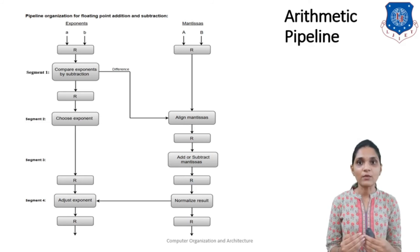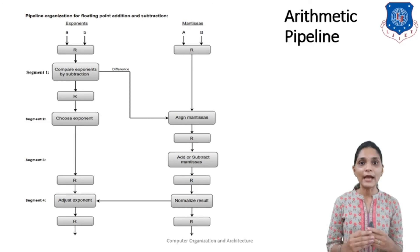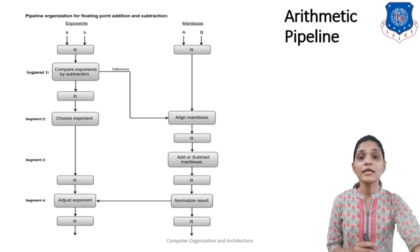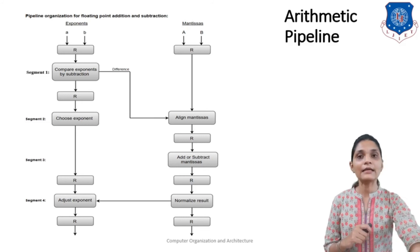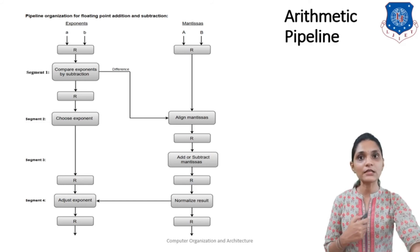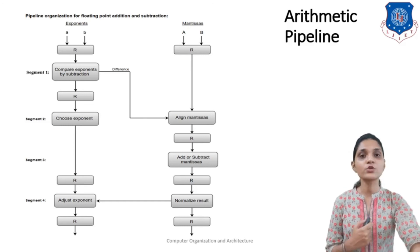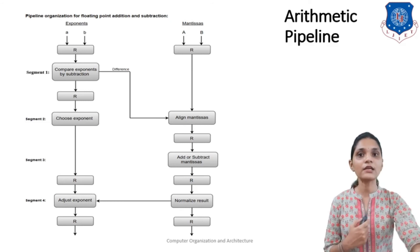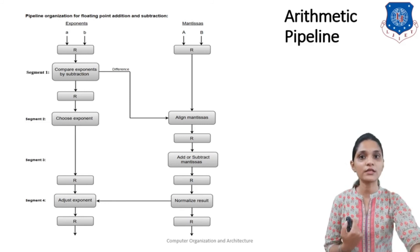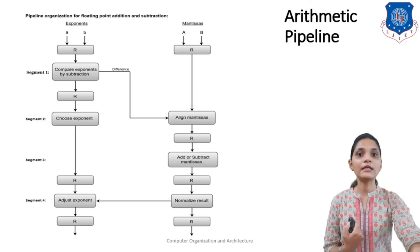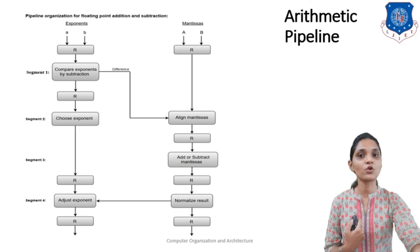In the second segment, the chosen exponent is used to align the mantissa, and that aligned mantissa is stored in register R. In the third segment, addition or subtraction of the mantissa terms is performed and the result is stored in register R, along with the exponent already chosen. In the fourth segment, the result stored in register R is not yet normalized, so normalization is performed here. If any adjustment to the exponent — increase or decrease — is required, it is done here, and the normalized mantissa and adjusted exponent are stored in register R.